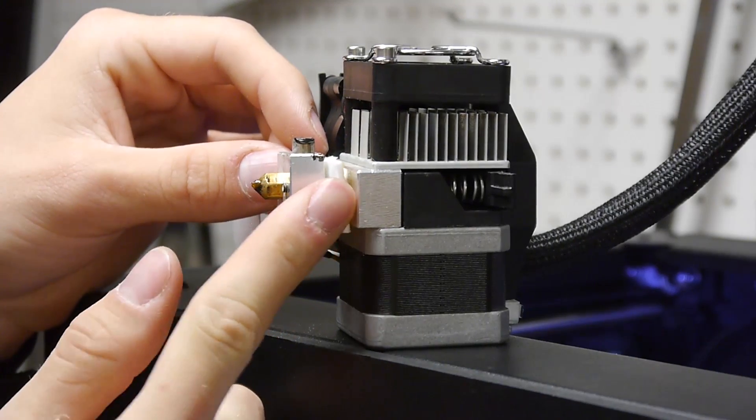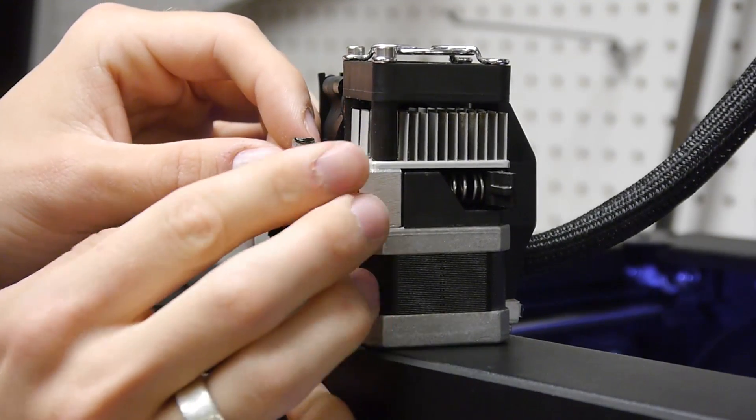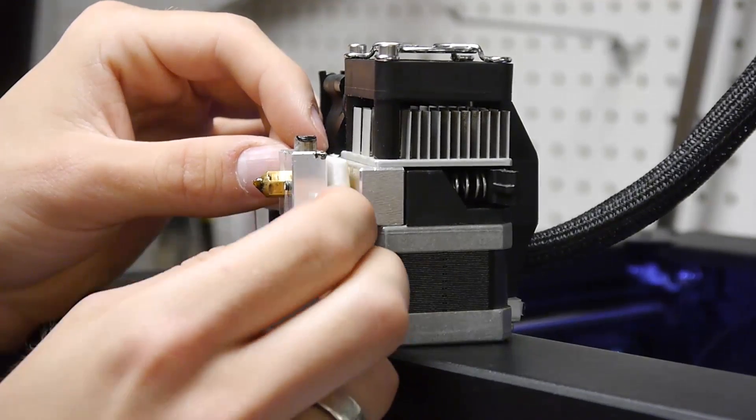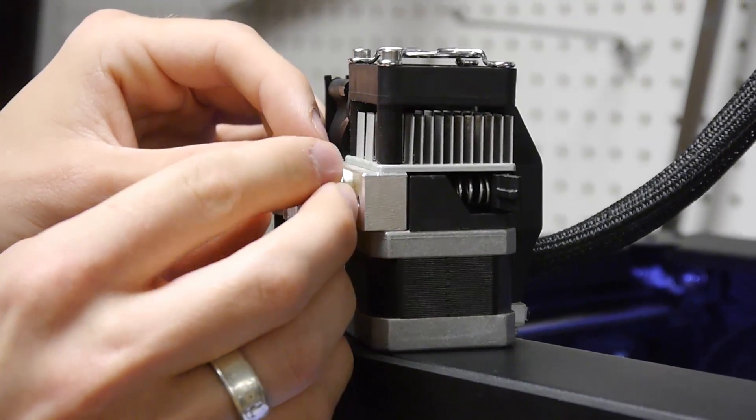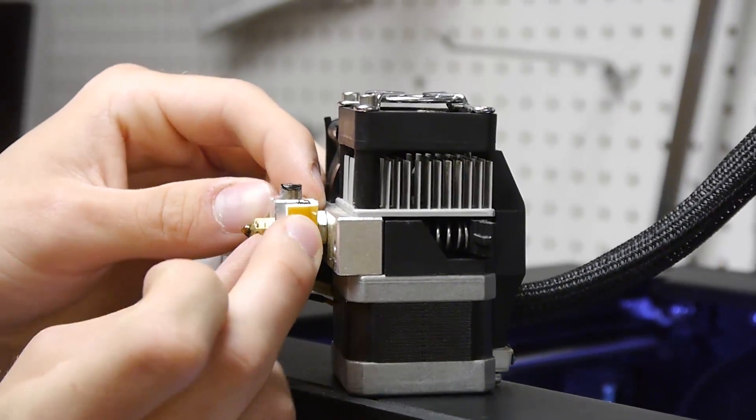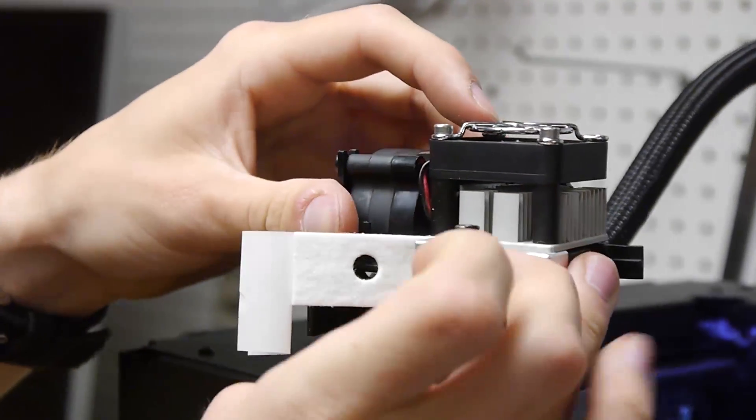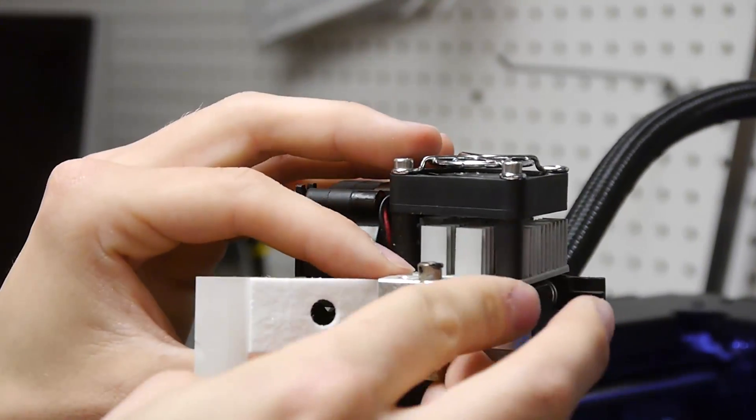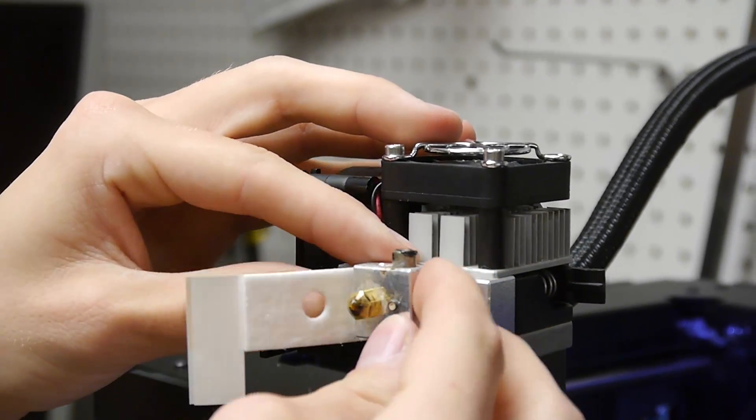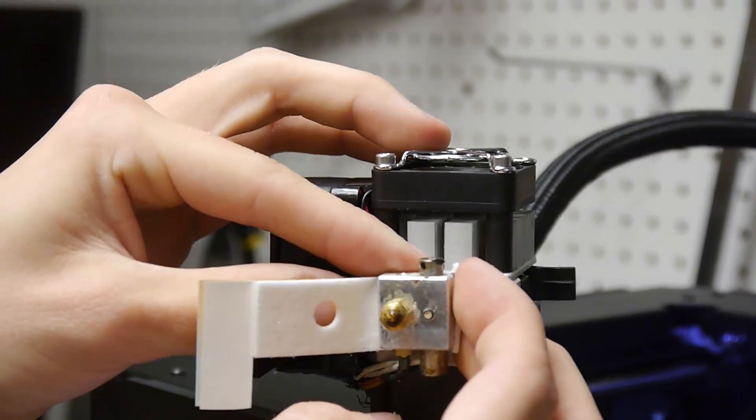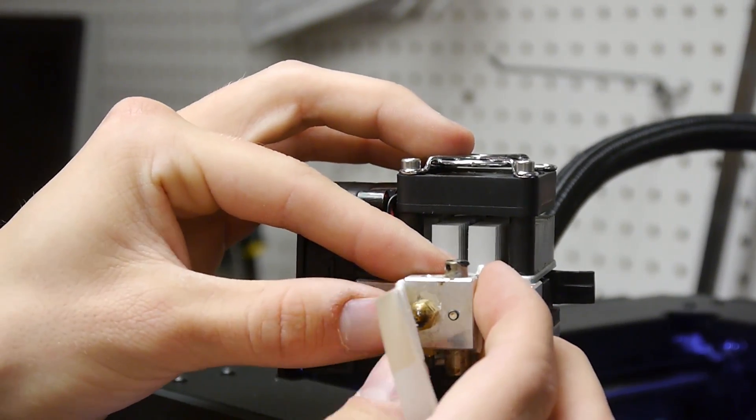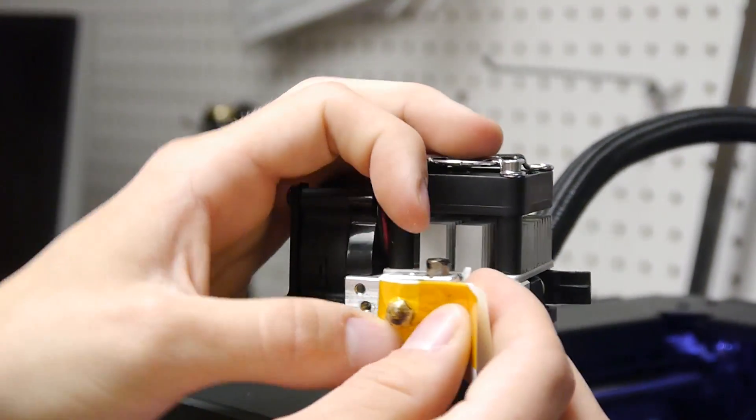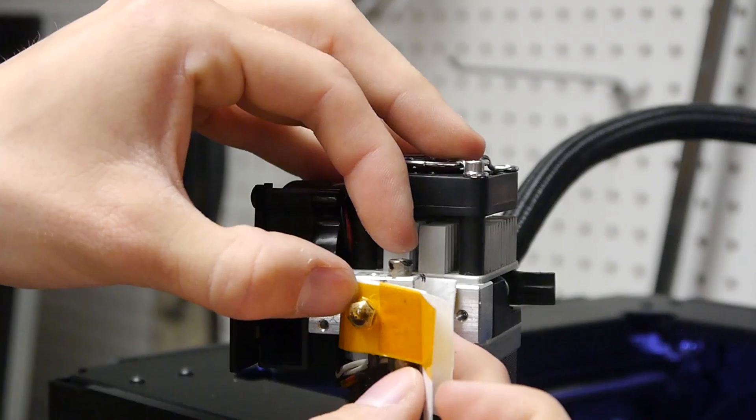Then what you're going to want to do is fold that under like that. Then on the front what we're going to do is fold this over the nozzle like that. Then it's nice and tight around the nozzle.